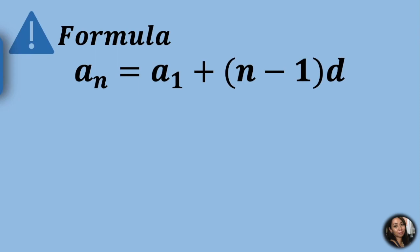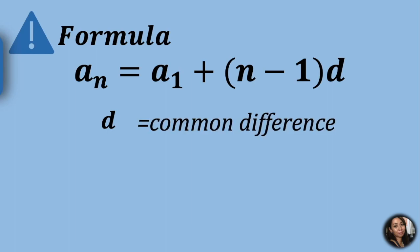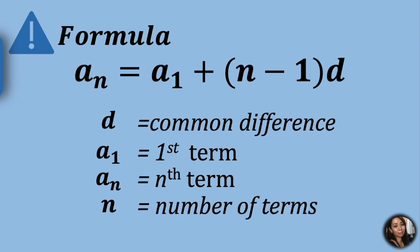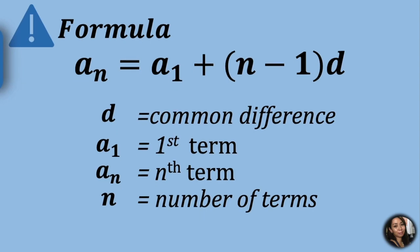Our formula is: a sub n is equal to a sub 1 plus the quantity n minus 1, times d. We already know our d, which is the common difference, our a sub 1, the first term, our a sub n is the nth term, and n is the number of terms. To be familiar with the formula, let's try to use it.